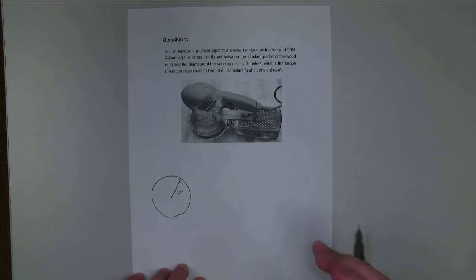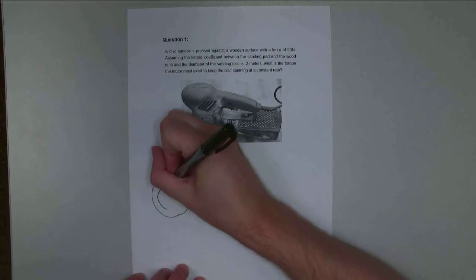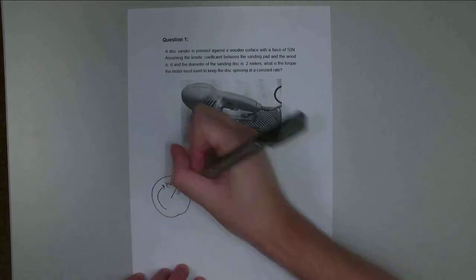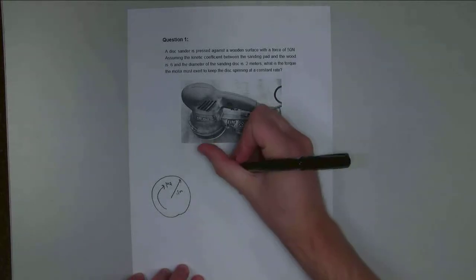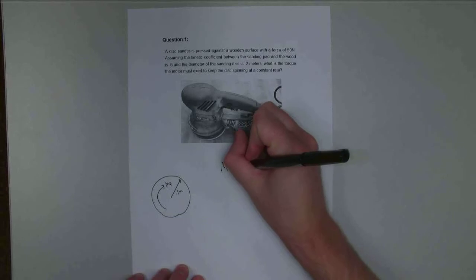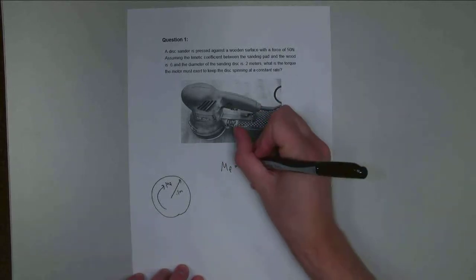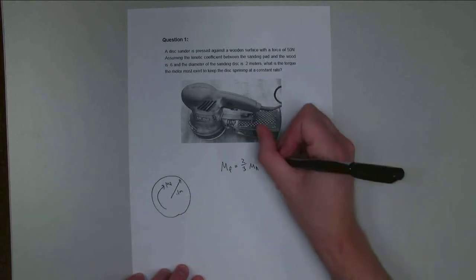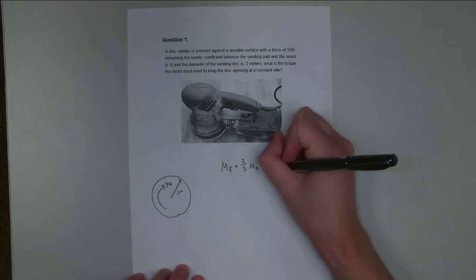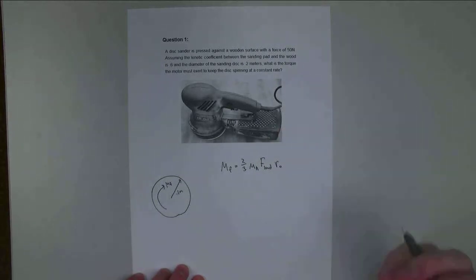And I'm going to have some force driving it. And what I need to find first is the moment that the friction force exerts resisting motion. And so that moment, we're going to use our equation. The moment due to friction is, for a solid circular area, going to be 2/3 times the kinetic coefficient of friction times the load force times the radius of our disc, our circular area.